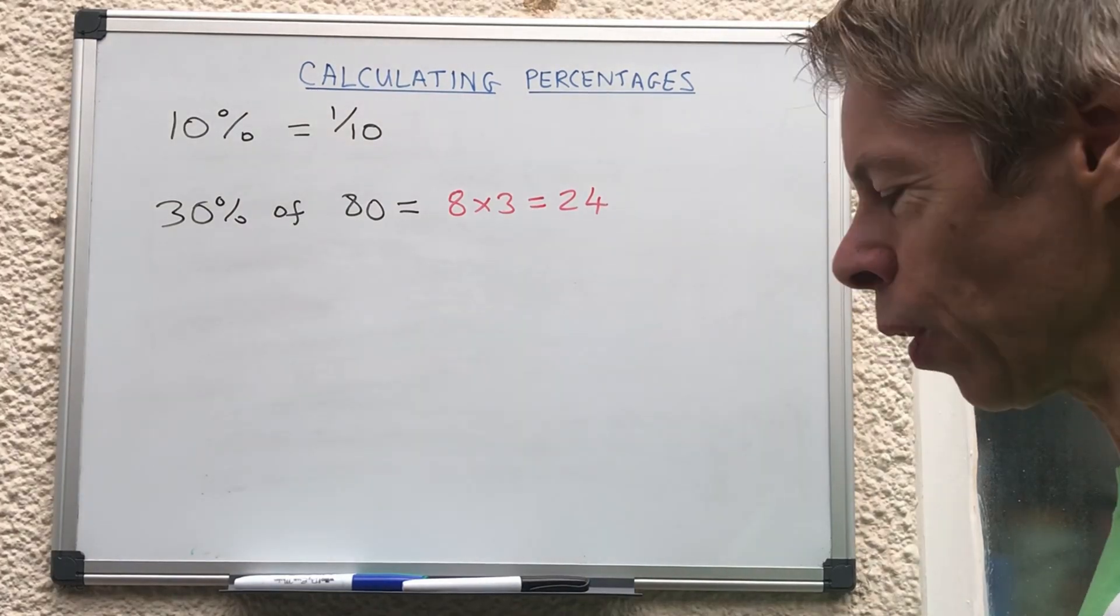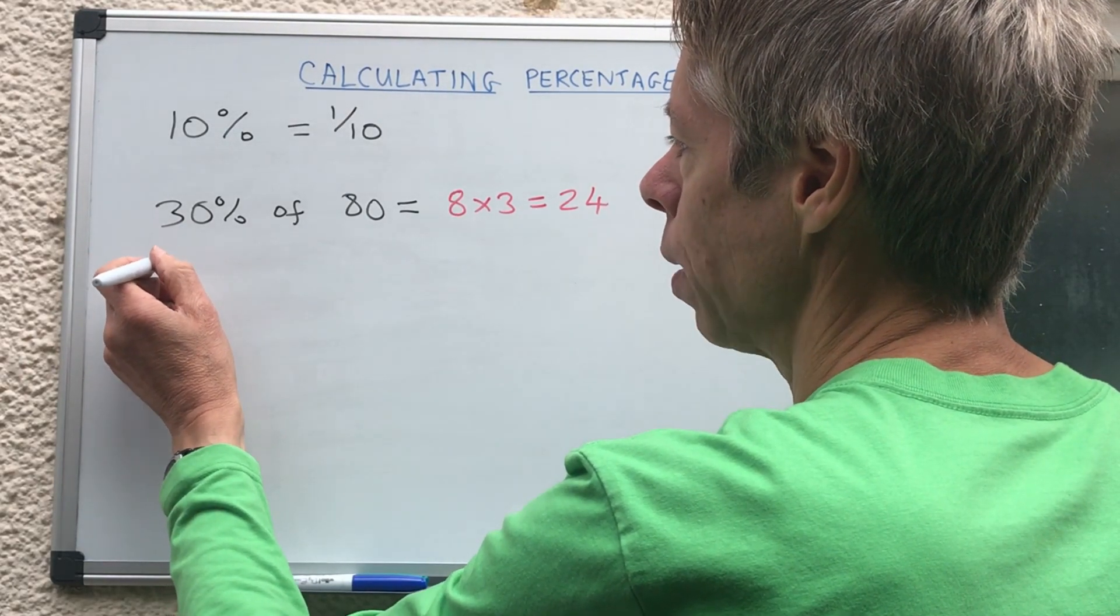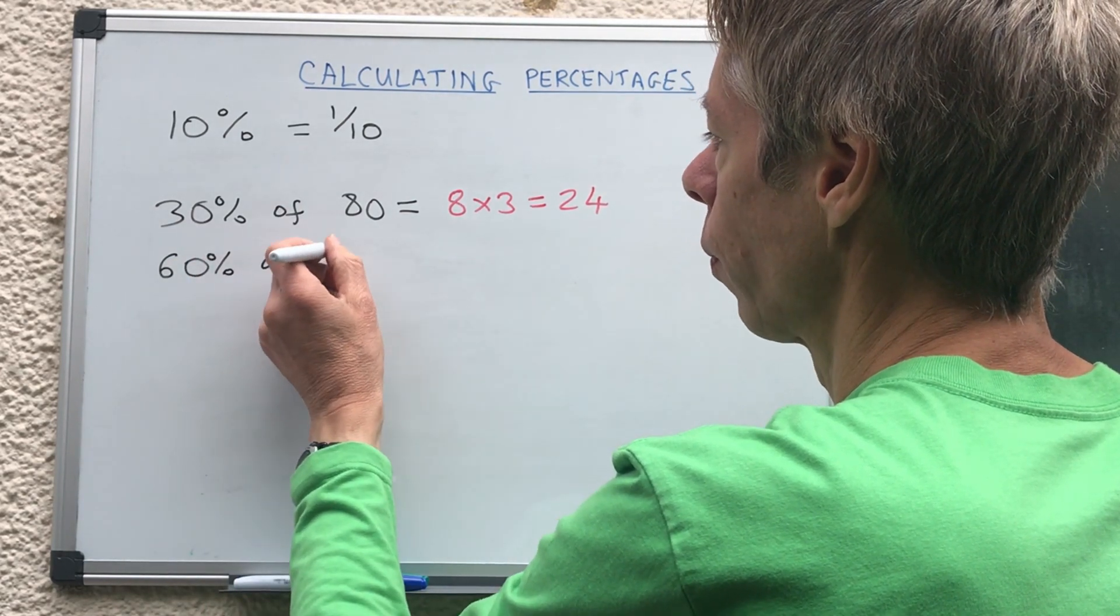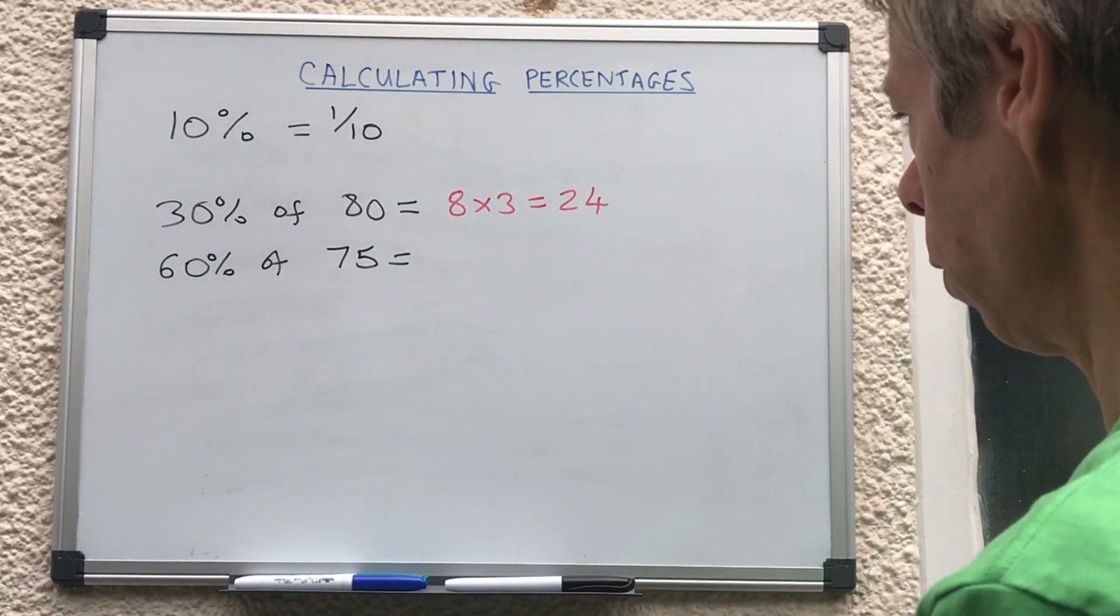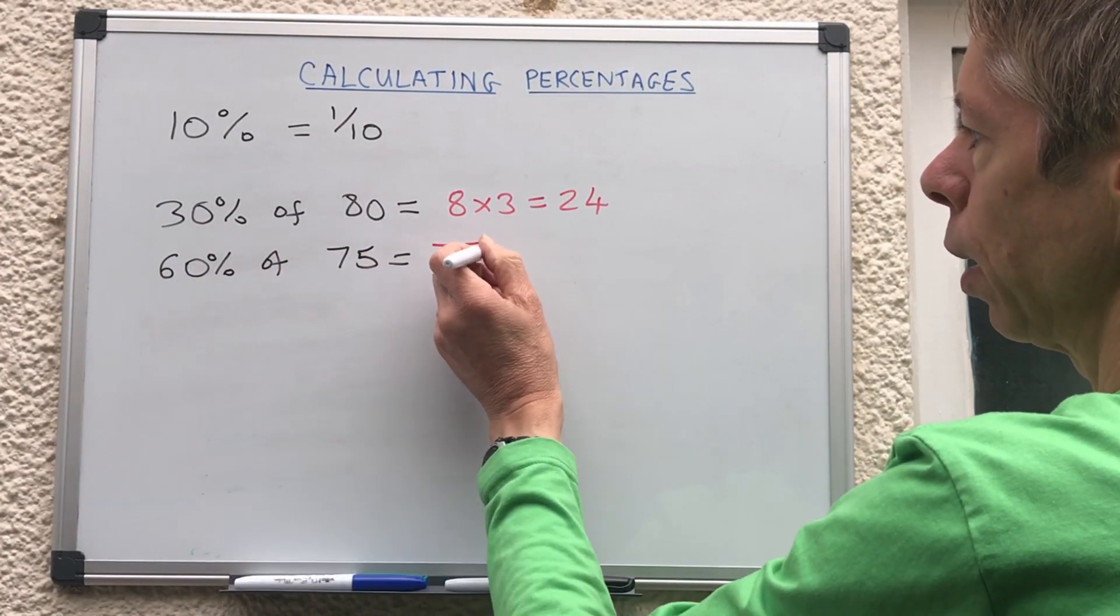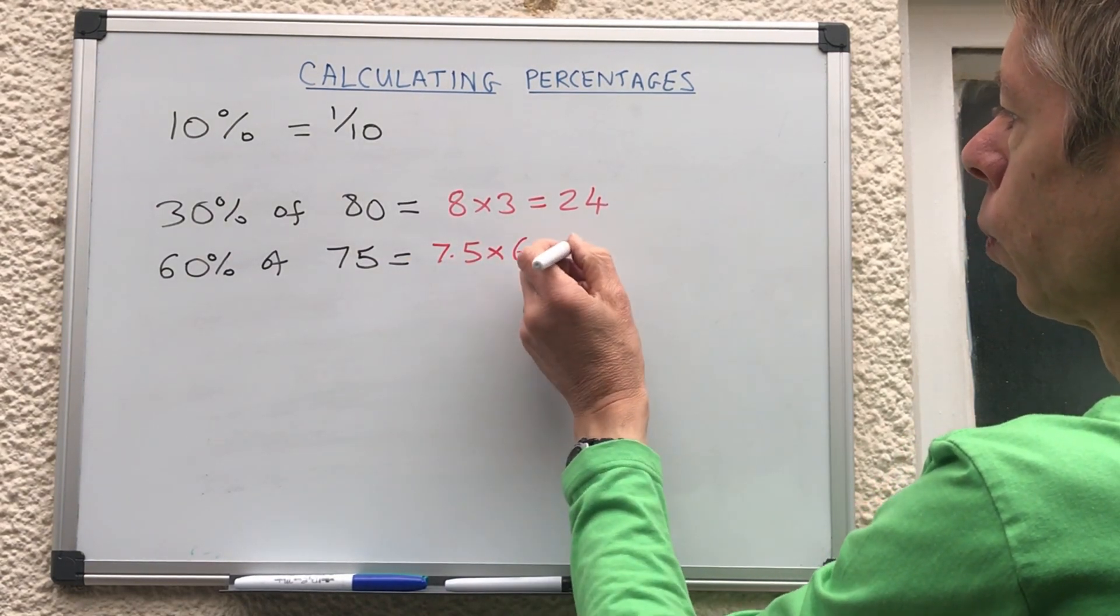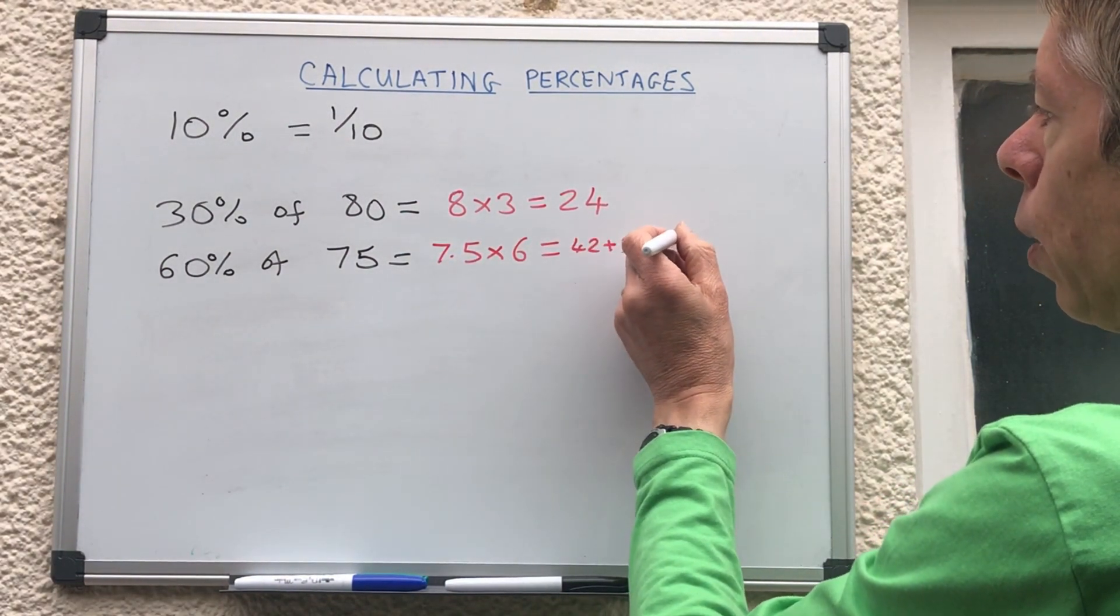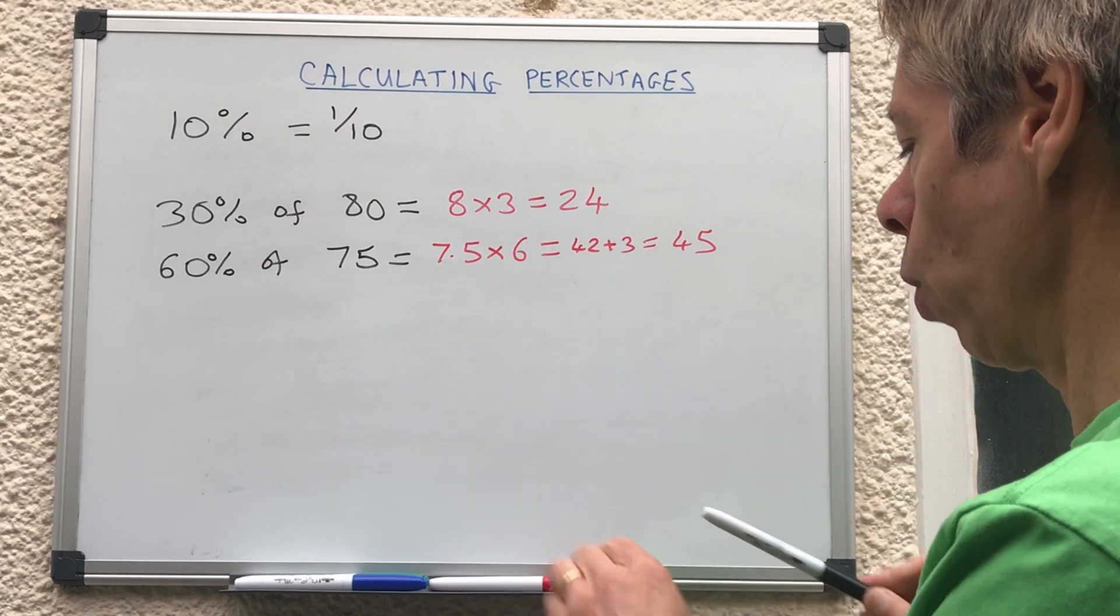What about if it was a massive 60 percent off? So we're gonna do 60 percent of 75 this time. First of all we need to divide it by 10 to give us 7.5. Because it's 60 we need to multiply by 6, so 6 times 7 is 42 and then 6 times a half is 3, so that would be 45.